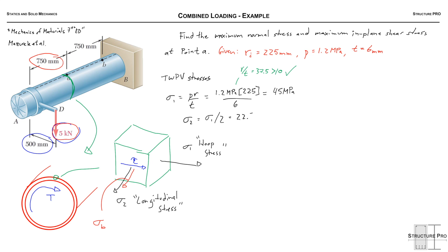That means that sigma 1 is 45 MPa or 37.5 times the pressure in the vessel. Okay, so sigma 2 is just half of that. We know from our equations, so that's 22.5 MPa, the longitudinal stress.